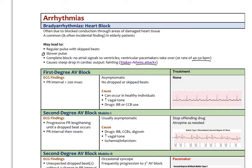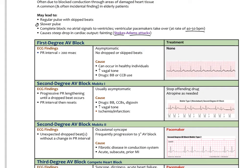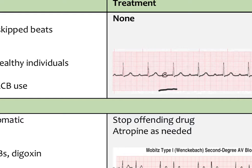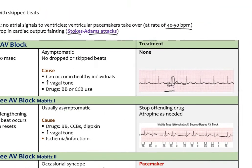AV blocks are classified as first, second, and third degree. A first degree AV block is often asymptomatic with no skipped beats, but we get a very long PR interval — greater than 200 milliseconds. Notice on the ECG that the signal is passing to the ventricles, giving a normal QRS complex and normal T wave, but with a constant delay between each P wave and QRS complex. This can occur in healthy individuals, sometimes due to increased vagal tone or too much parasympathetic tone, and can be triggered by beta blockers or calcium channel blockers.